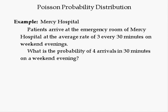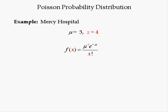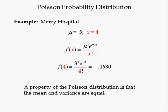In the example, patients arrive at the emergency room of Mercy Hospital at the average rate of 3 every 30 minutes on the weekend. This is mu, which is given in every Poisson problem. What is the probability of 4 arrivals in 30 minutes on a weekend evening? 4 is the number of occurrences denoted by X, and always follows the phrase 'what is the probability?' Mu is equal to 3 and X is equal to 4. Plugging these in: f(4) equals 3 raised to the power of 4 times e to the negative 3 divided by 4 factorial, which is equal to 0.1680.